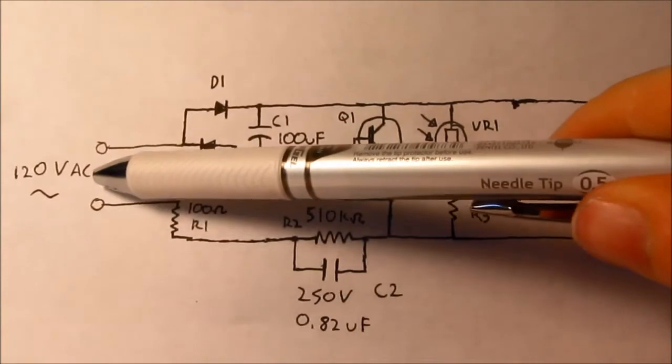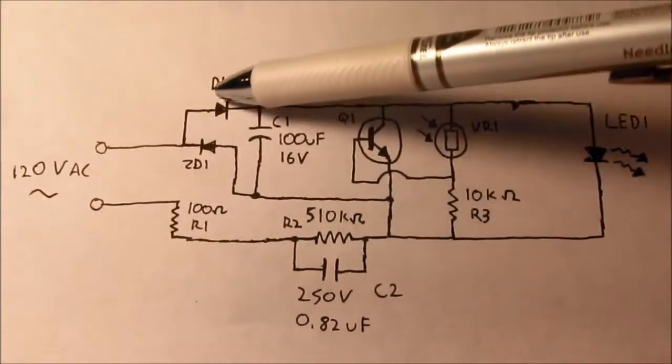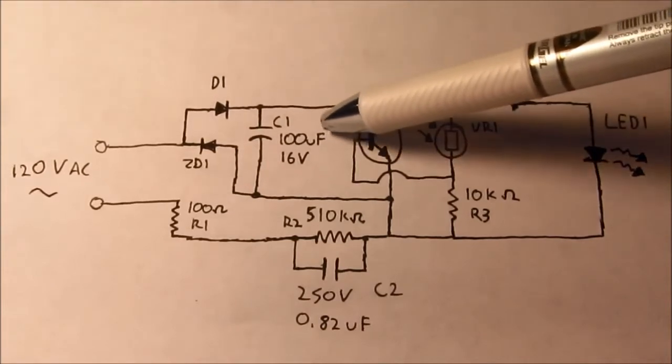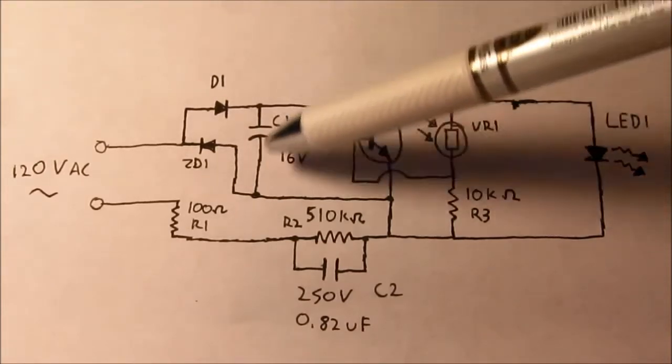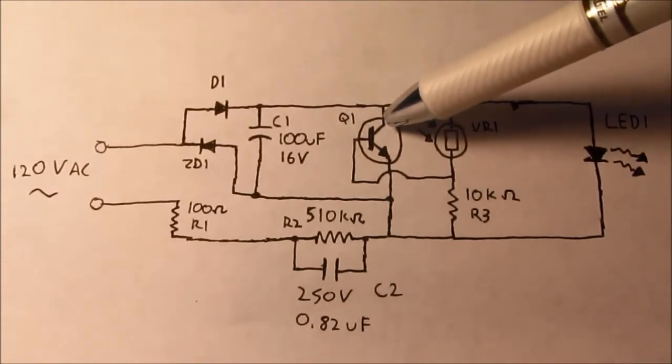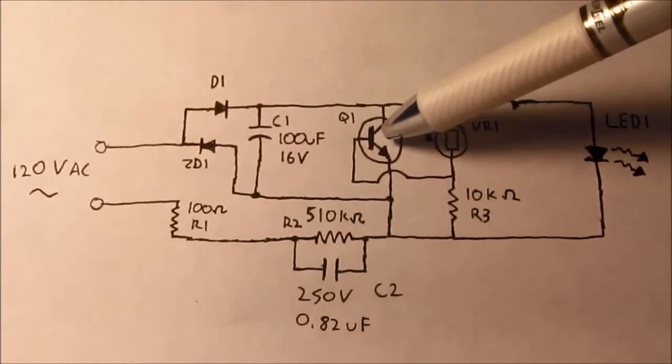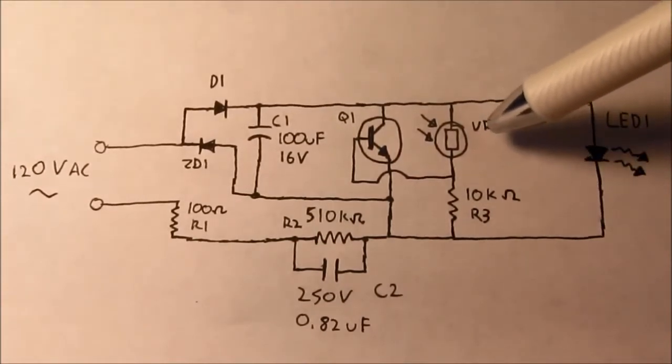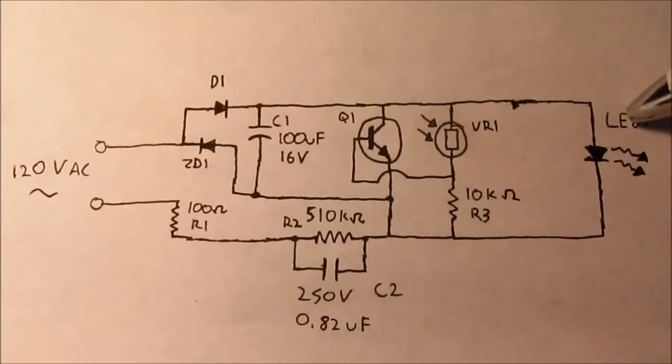I have the 120 volts AC input. That goes through D1, the rectifier diode, to C1, the 100 microfarad 16 volt electrolytic filter cap. This provides a positive voltage to the Q1 NPN transistor, VR1 the photoresistor, and LED1, the only LED in the circuit.